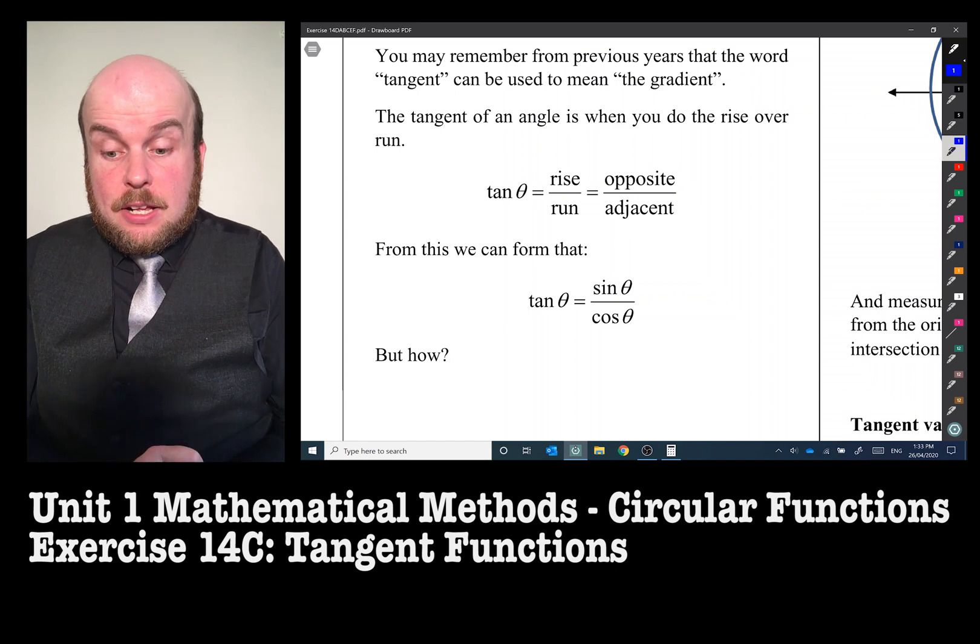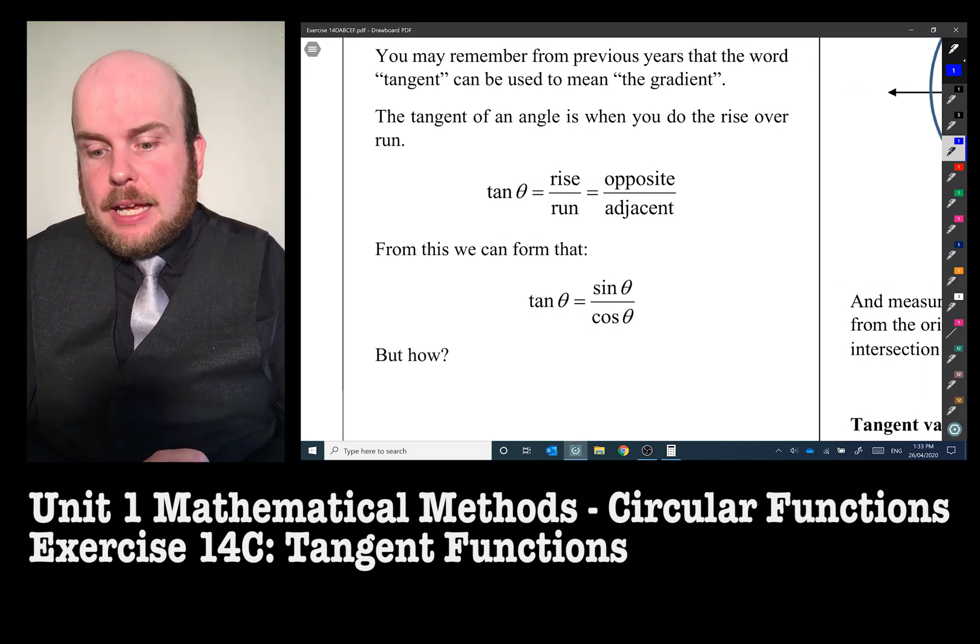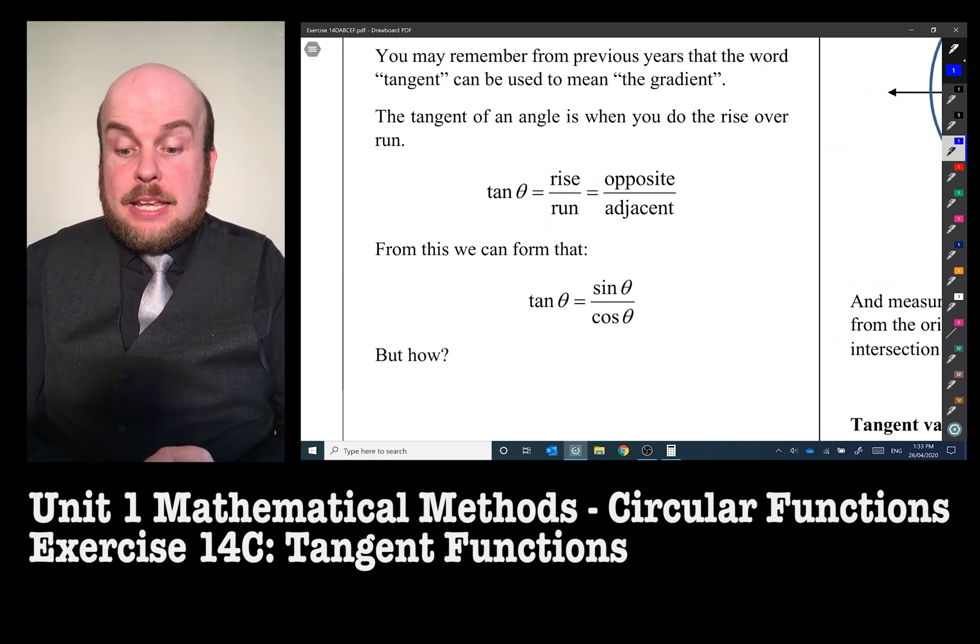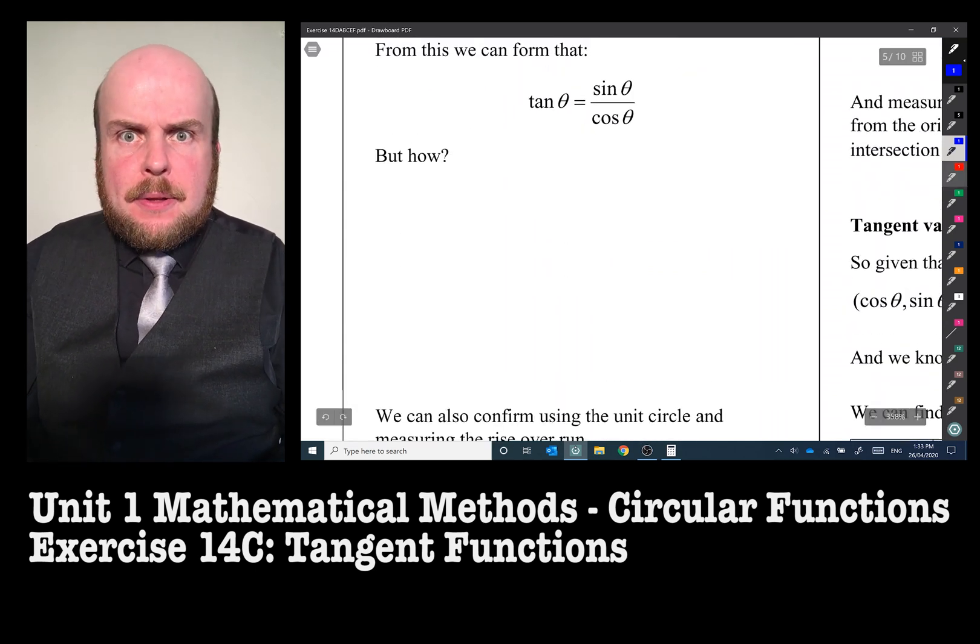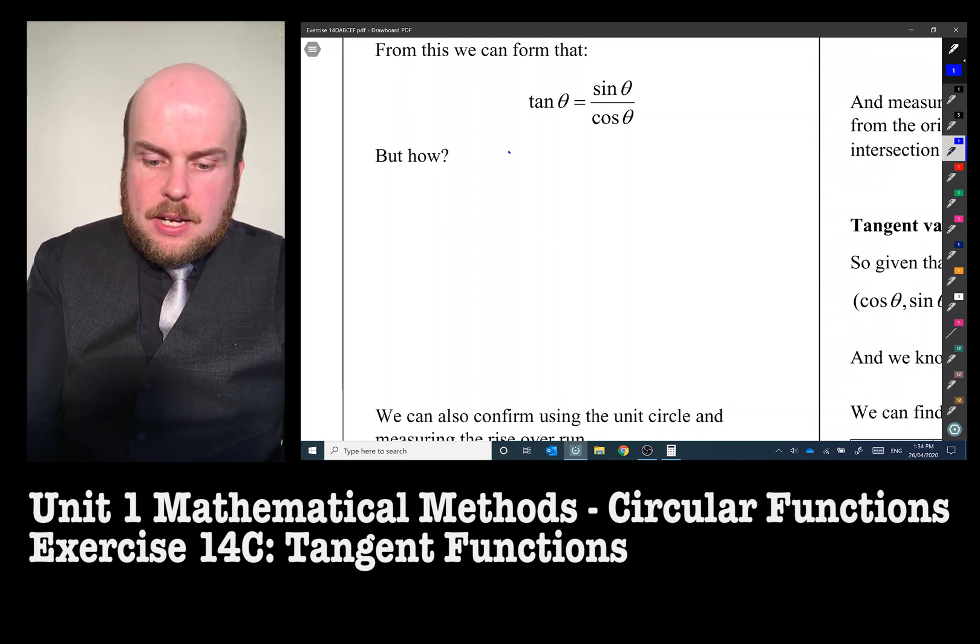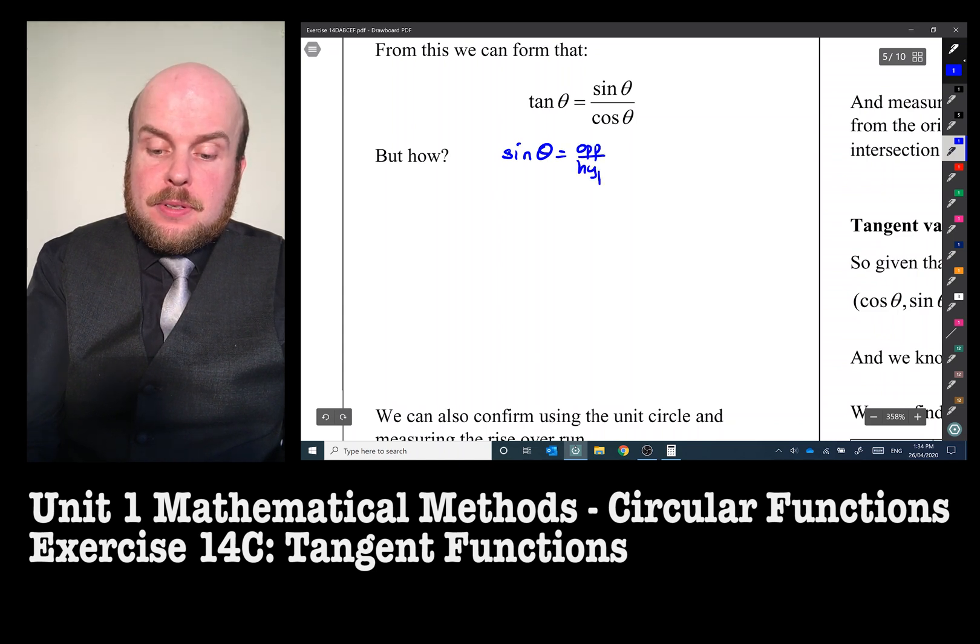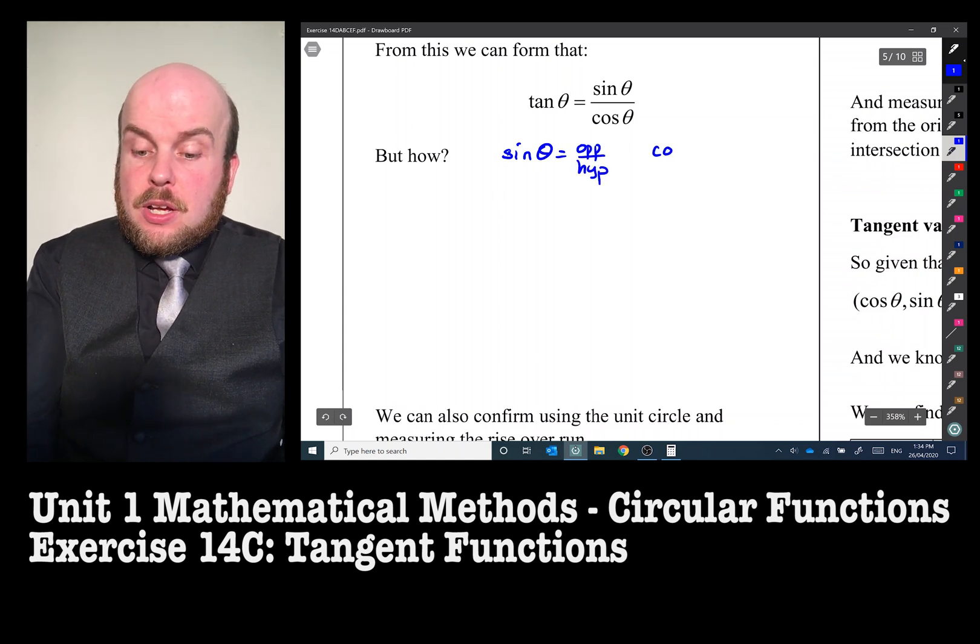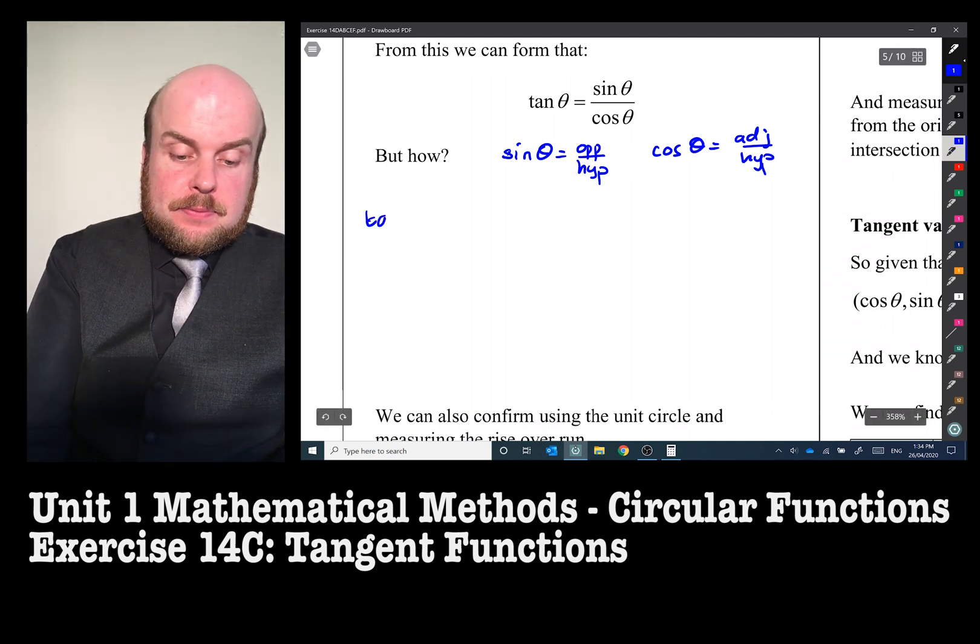The tangent of an angle is when you do rise over run, or otherwise opposite over adjacent. From this, we can tell that tan of an angle is the same as sine of an angle over cos of an angle. But how? Well, it comes down to doing some rather clever algebra. We know that sine of an angle equals opposite over hypotenuse, and cos of an angle equals adjacent over hypotenuse. And we know that tan of an angle equals opposite over adjacent.